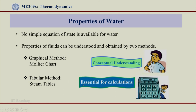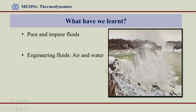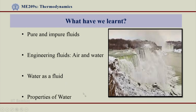What we normally refer to in order to get the properties of water is a tabular method — steam tables — which is basically a collection of all the experimental data, and with some property relations they have acquired data for other points. Steam tables are essential for calculation because they provide accurate properties of water at different pressures and temperatures. Summarizing what we have learnt: we learnt what is a pure fluid, what is an impure fluid, the difference between the two, then we concentrated on two basic engineering fluids — air and water — and ultimately concluded that we would study water in order to study fluids, going forward to study the properties of water.